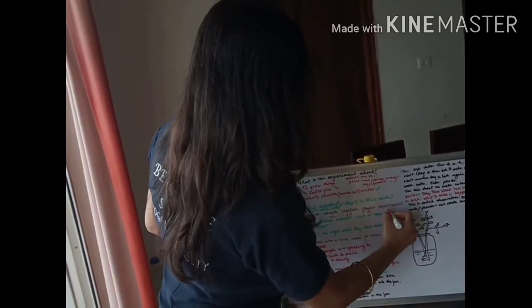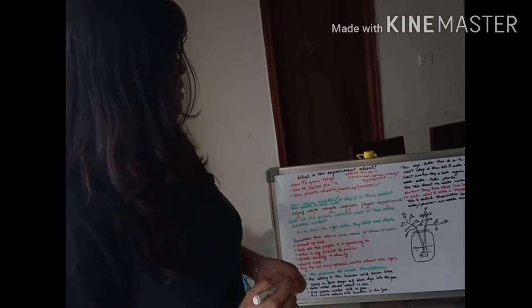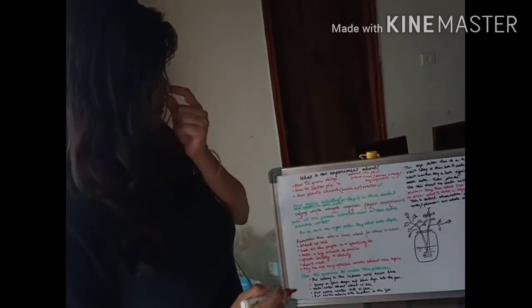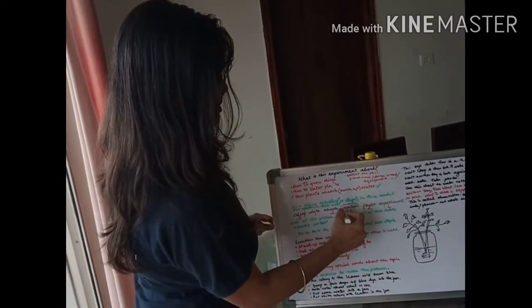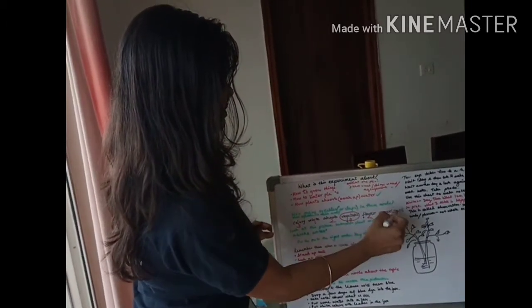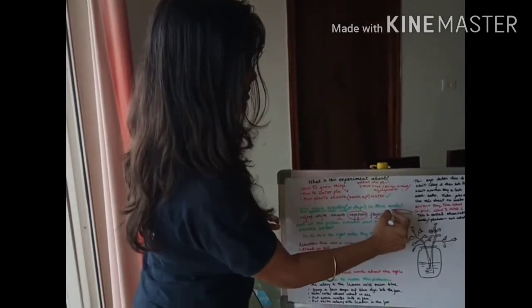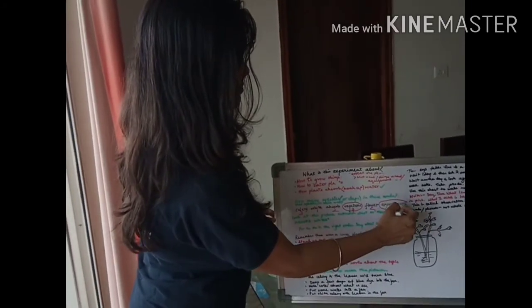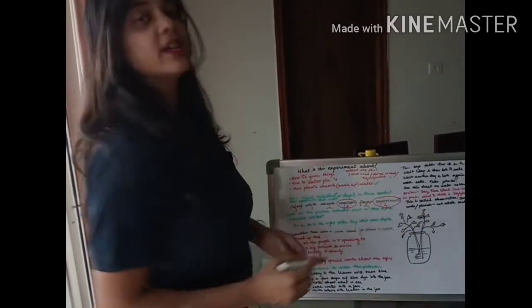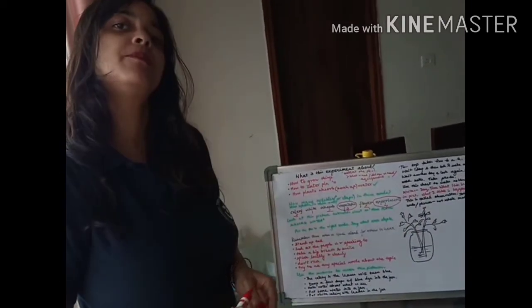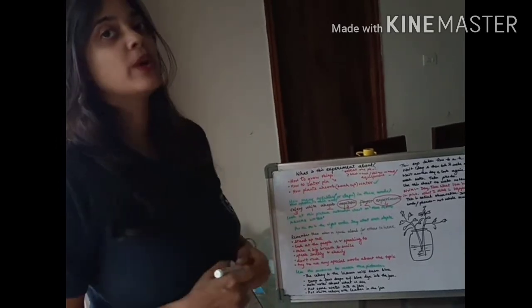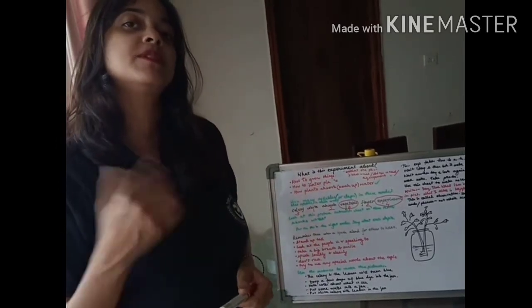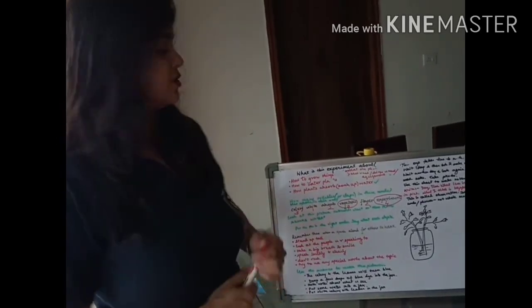In which word do you find the maximum syllables? In vegetable and experiment — both these words have the maximum number of syllables, that's four. This is how you get the number of syllables a word is broken into.